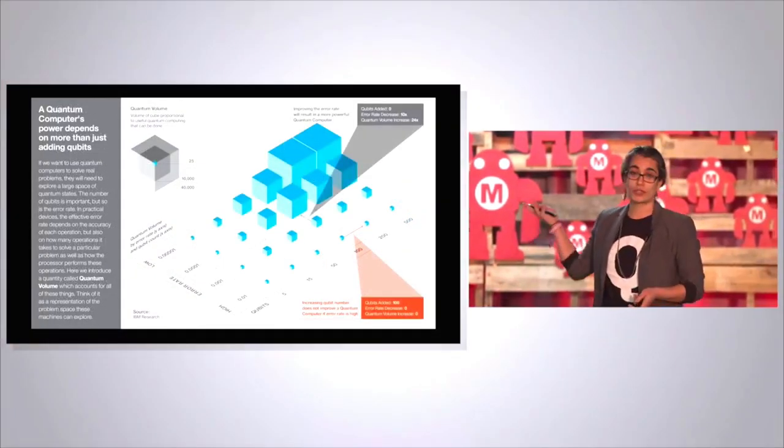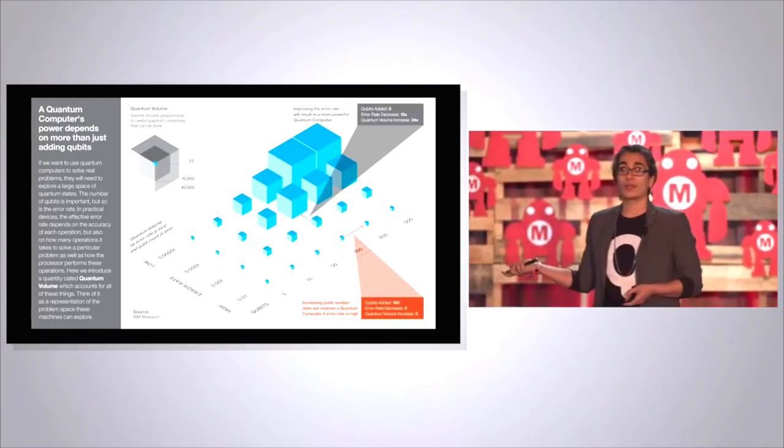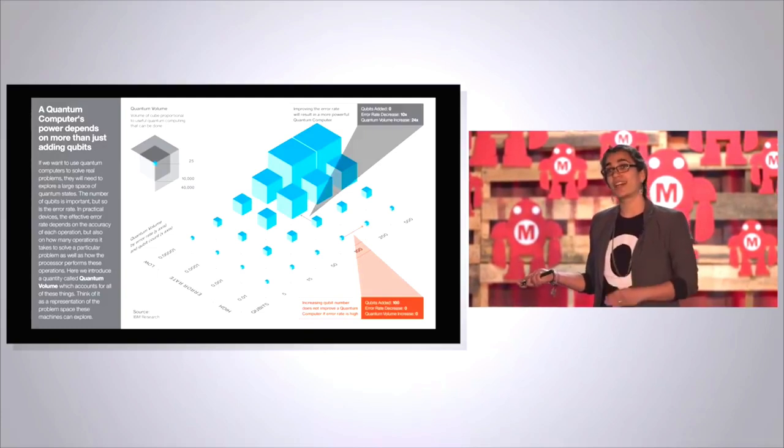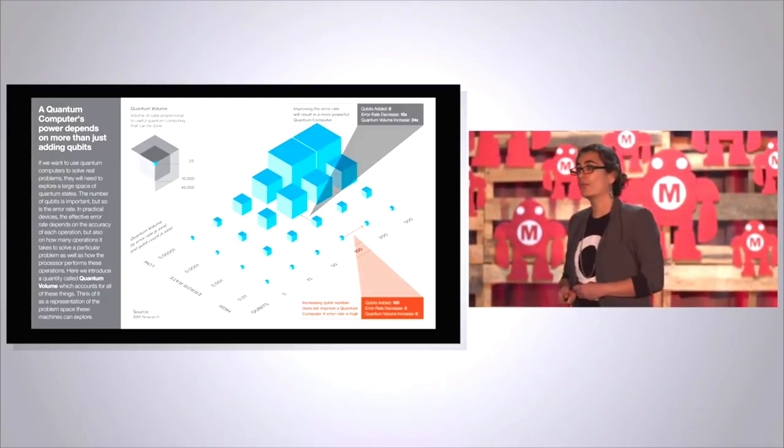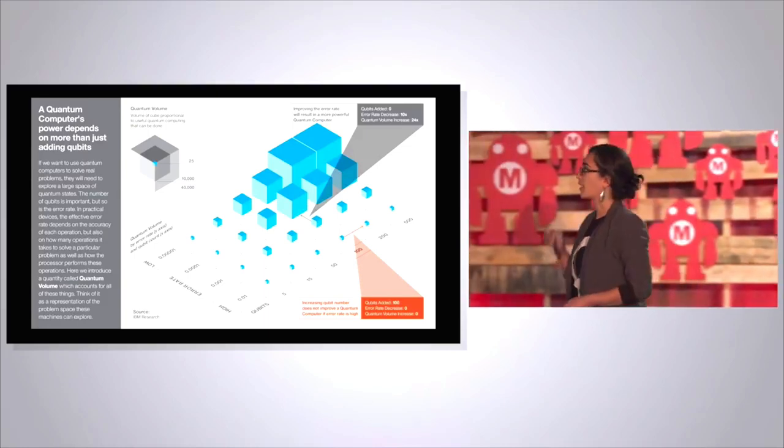So we're promoting a new metric called quantum volume, where we're saying, okay, if you increase the number of qubits, you can get to higher computational power, but not if you have really high error rates. So we have to both move towards lower error rates and higher qubit count.